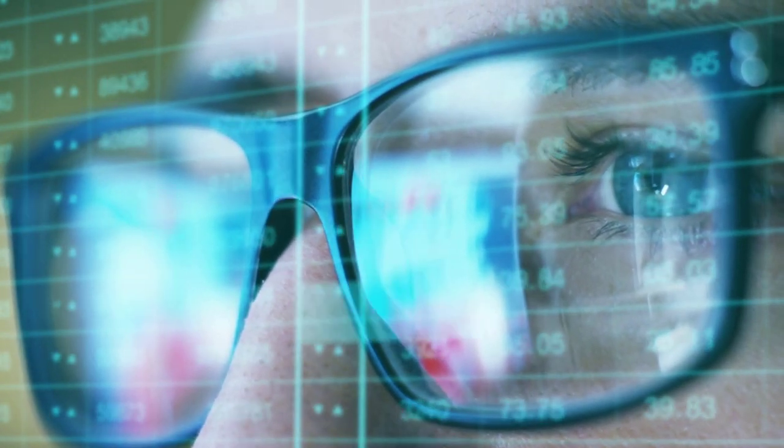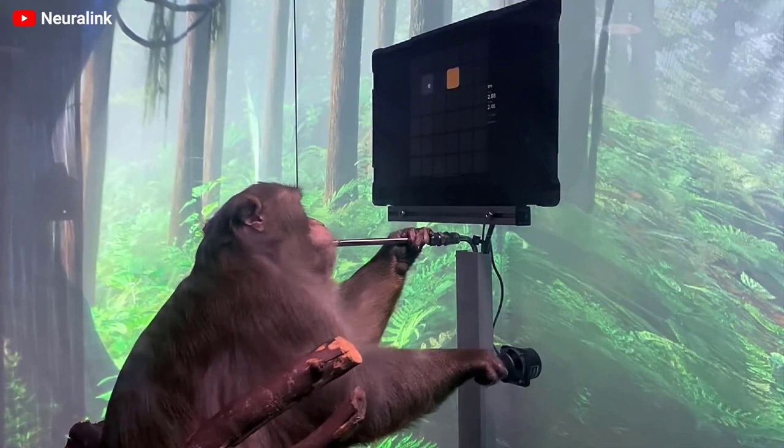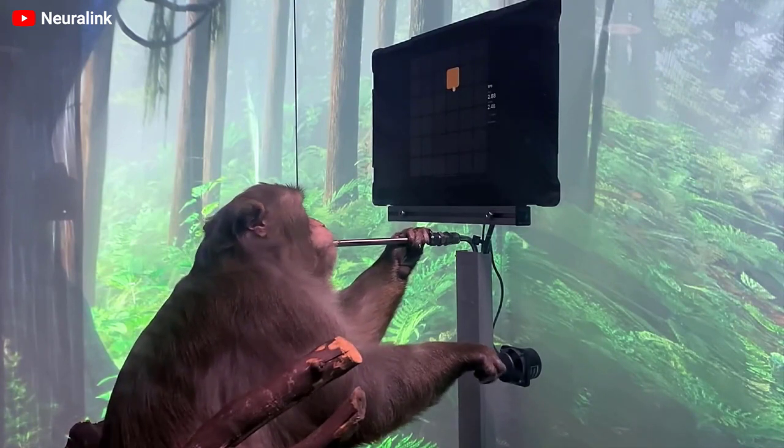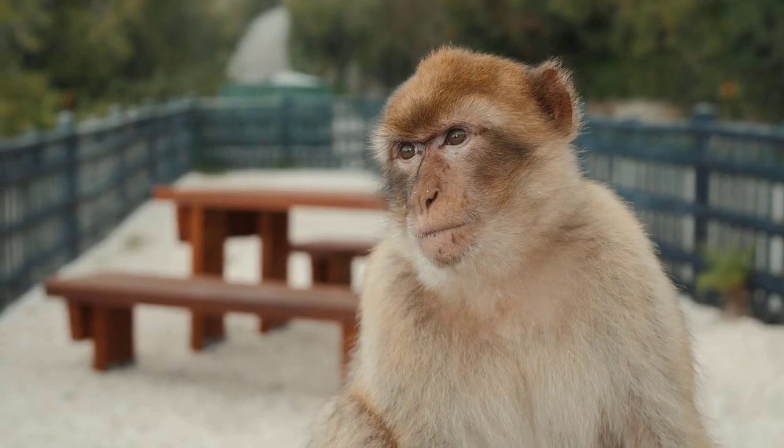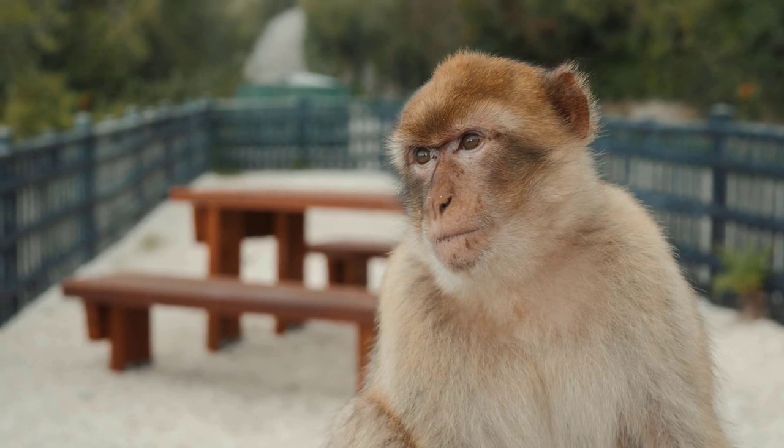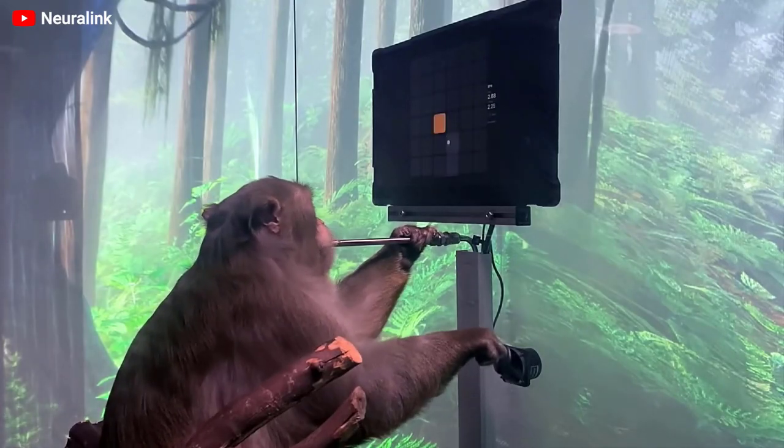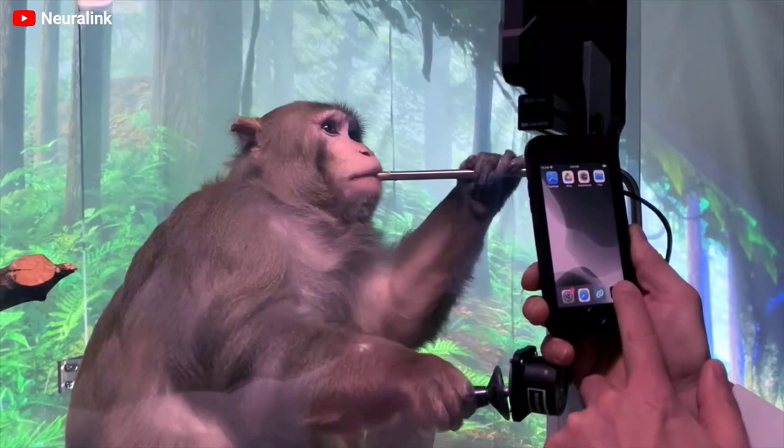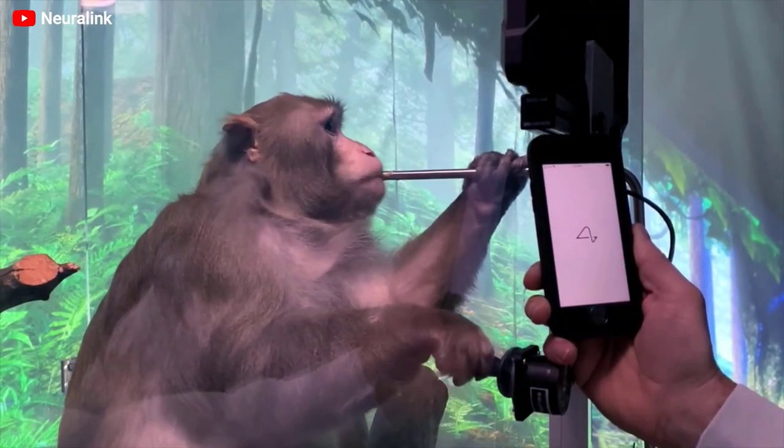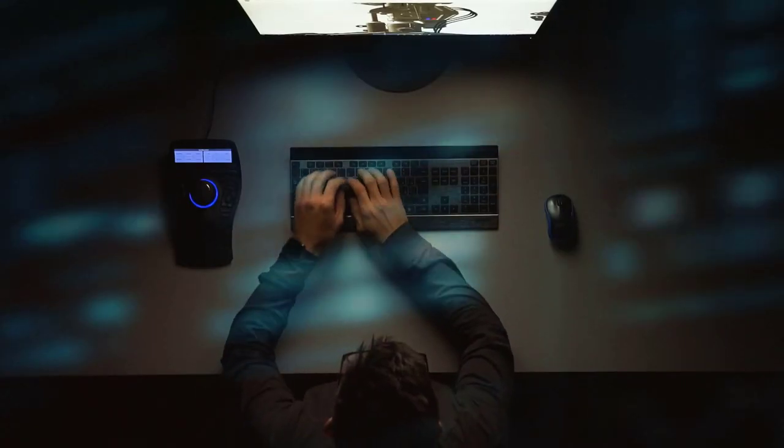This year, Elon Musk announced a video of a monkey playing computer games with his mind using a Neuralink chip embedded in his brain. It's not a super achievement, but given that not much time has passed since the experiments began, it already shows that the concept is viable with a number of competitive advantages. A chip that is set for life has yet to prove its longevity.